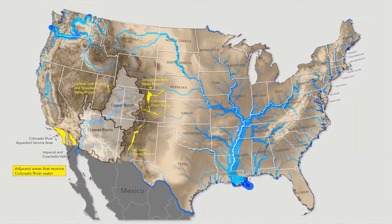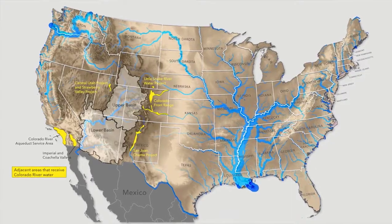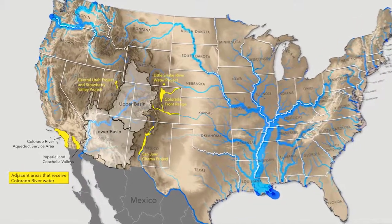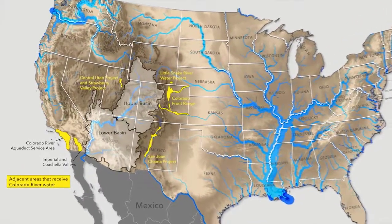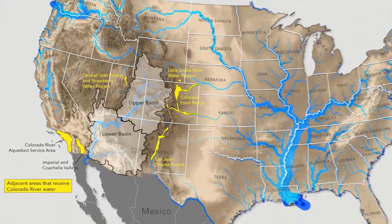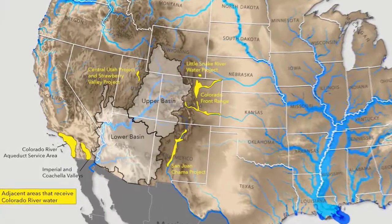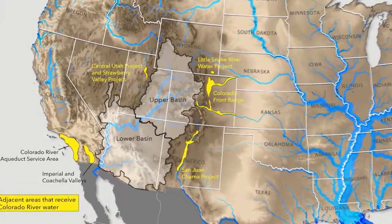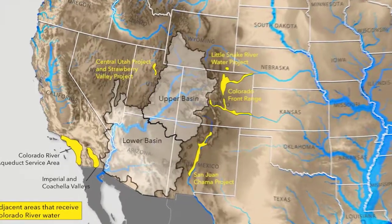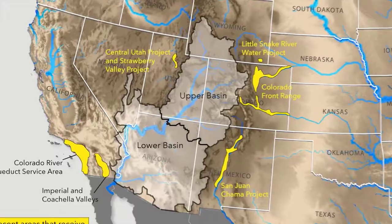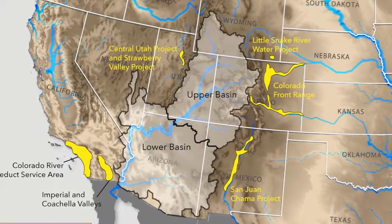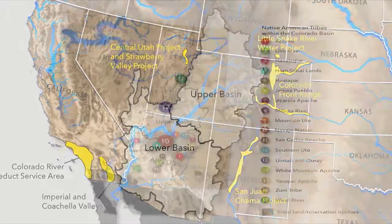The Colorado River Basin includes parts of seven U.S. states — Wyoming, Colorado, Utah, New Mexico, Arizona, Nevada, and California — as well as two Mexican states, Baja California and Sonora. The Colorado River Basin is also home to many Indian reservations and other tribal lands, as shown on this map.